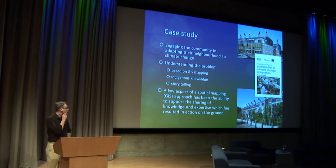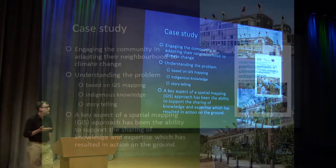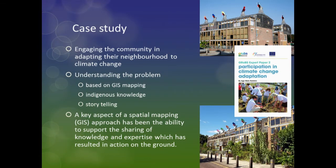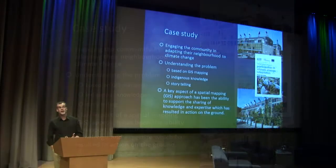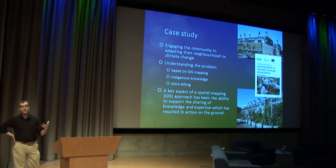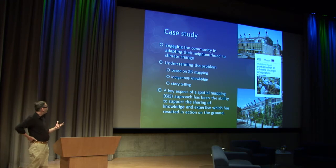So what can be done to overcome these problems around engaging people in geodesign and spatial decision making? I want to focus on a case study — a research project we did a couple of years ago, funded at around four million dollars from the European Commission, looking at green and blue space adaptation planning in 12 municipalities across Europe. We were trying to engage local communities in decision making about how they adapt their neighborhoods to climate change, starting with GIS maps.